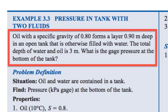Oil with a specific gravity of 0.8 forms a layer 0.9 meters deep in an open tank that is otherwise filled with water. The total depth of water and oil is 3 meters. What is the gauge pressure at the bottom of the tank?